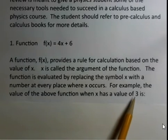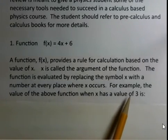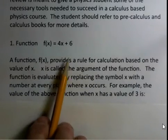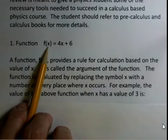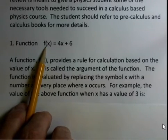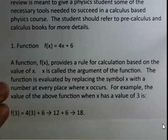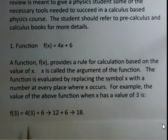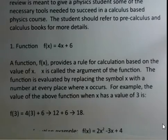We evaluate the function for some value of x by replacing x with that number wherever x appears. So if we want to know the value of the function when x is 3, we replace x with 3. f of 3 equals 4 times 3 plus 6. We multiply before we add, so we get 12 plus 6, which gives us 18 for the value of the function.